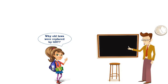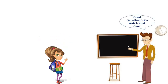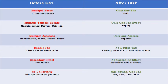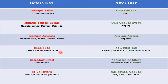Why were old laws replaced by GST? Let's watch the next chart. You can see two scenarios: before GST and after GST. Before GST, India had multiple taxes — 17 indirect taxes. After GST, there is only one tax: Goods and Service Tax. Before GST, there were multiple taxable events like manufacturing, services, etc. After GST, there is only one taxable event: supply — supply of goods, supply of services, or supply of both. Before GST, there were multiple types of persons liable — manufacturer, dealer, trader, seller. After GST, there is only one: the supplier. Before GST, there were chances of double taxation — the same thing could be taxed twice. After GST, that is not possible because supply of goods or services is properly defined.